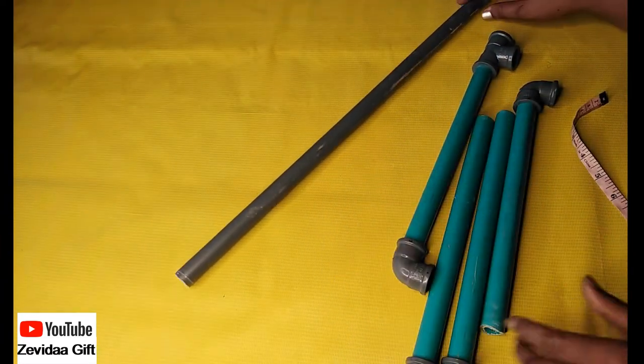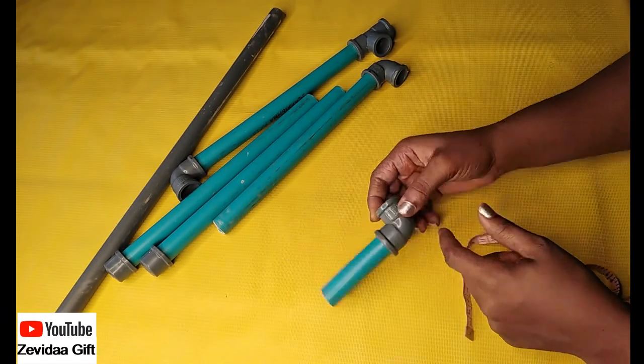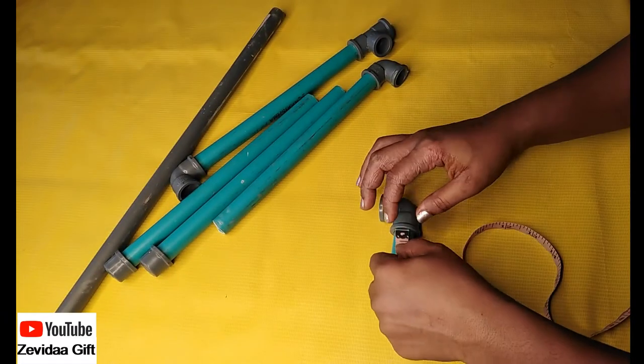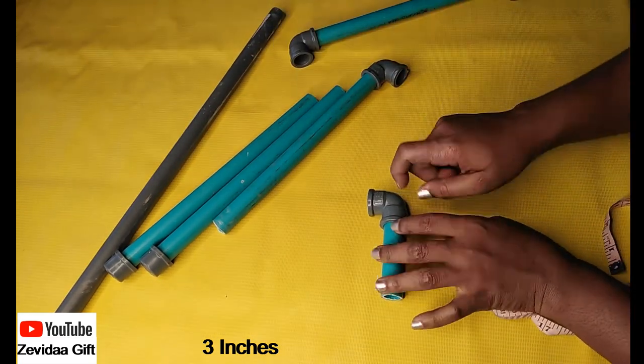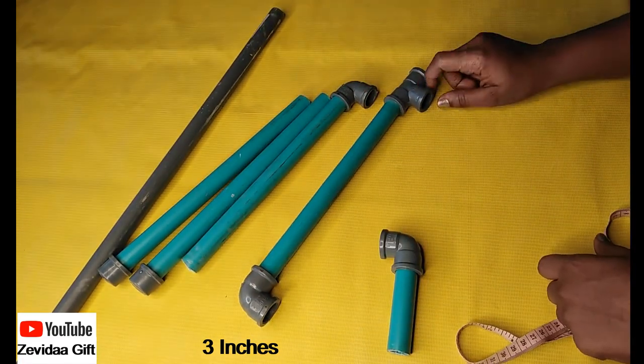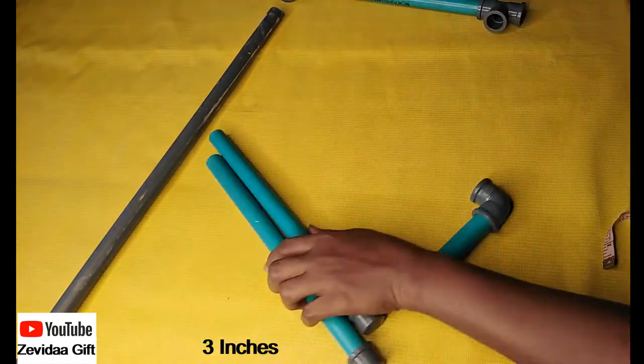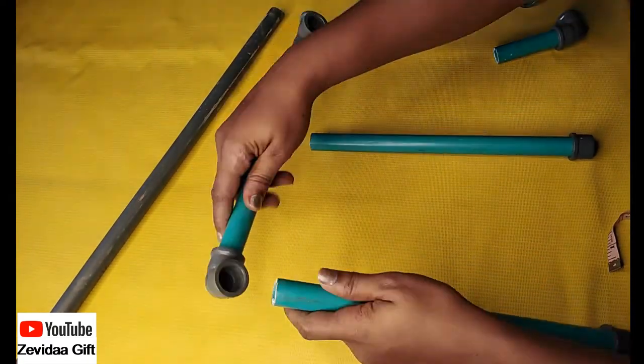I'm going to grab the third, that's the last PVC pipe, and this is measuring 3 inches. I inserted an elbow to it. So all together we have two caps, two elbows, and two T-joints.